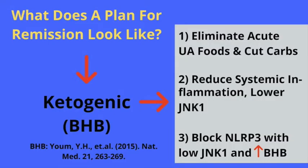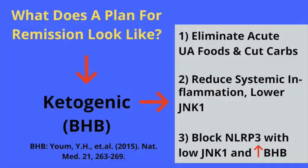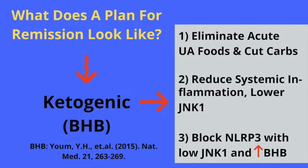So knowing what we know, what does a gout protocol look like? First and foremost, we need to eliminate alcohol and fructose, and also eliminate hyperglycemic events, because hyperglycemia can influence the amount of endogenous fructose produced within the cell. Secondly, we want an eating plan that is going to reduce systemic inflammation, therefore lowering the production of JNK1 and IL-1-beta. And third, by lowering systemic inflammation and bringing JNK1 down along with IL-1-beta, we will also block the formation of the NLRP3 inflammasome and other possible inflammasomes.